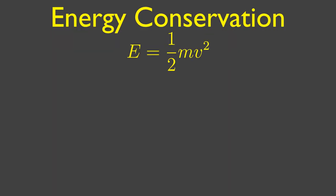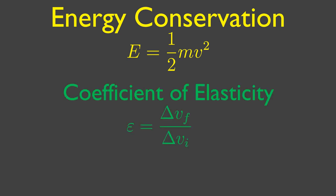Energy is sometimes conserved. We can classify collisions with a number called the coefficient of elasticity.